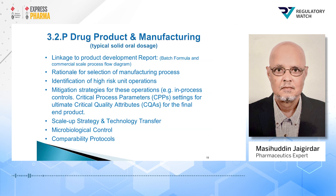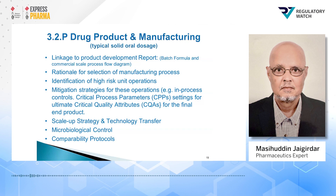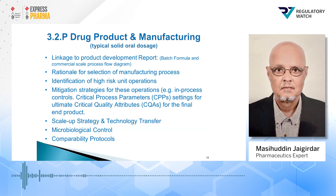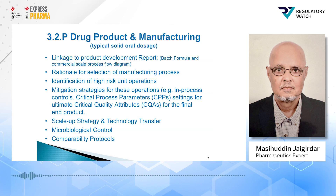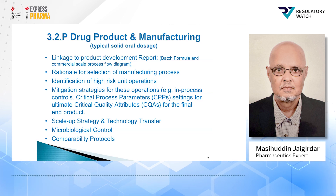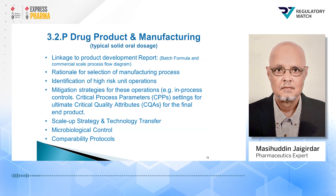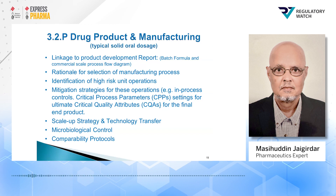The link is to the product development report. Sometimes you will find the best formula and commercial scale process flow diagram are missing. The product development report must have the link with the best formula and commercial scale process flow diagram. There has to be a rationale for the selection of the manufacturing process — it cannot be random. In the product development report, there has to be a rationale for why the applicant or the firm selected a particular manufacturing process.